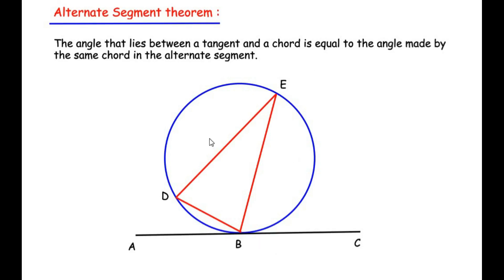Here I have drawn a circle and there is a tangent ABC touching the circle at point B and a chord BD is drawn inside the circle. This chord divides the entire circle into two segments — a smaller segment called the minor segment, and a larger segment called the major segment. According to the theorem, if the chord makes an angle with the tangent of say 30 degrees, then this angle is equal to the angle made by the same chord in the alternate segment, that is in the major segment — so it is also 30 degrees.